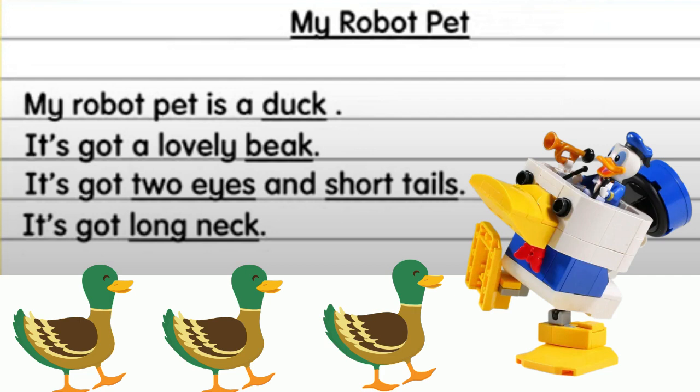How to write about your picture. Number one, you need to write the name of the animal — the name of the pet. Number two, you need to describe the parts of the animal. So for example, you can see here — this is a picture of a duck, a robot duck.